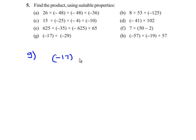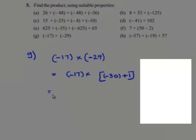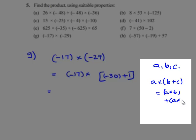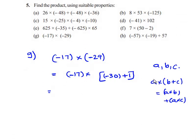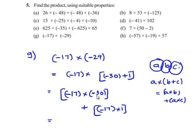We'll see the next problem: negative 17 multiplied by negative 20. This can be written as negative 17 times of (negative 30 plus 1). From the distributive law of multiplication over addition, negative 17 is the common term corresponding to a, negative 30 corresponds to b, and 1 corresponds to c. Therefore, this can be written as negative 17 times negative 30 plus negative 17 times 1. Negative 17 times negative 30 gives plus 510, and negative 17 times 1 is negative 17. Therefore, 510 minus 17 gives plus 493. Therefore, the answer is plus 493.